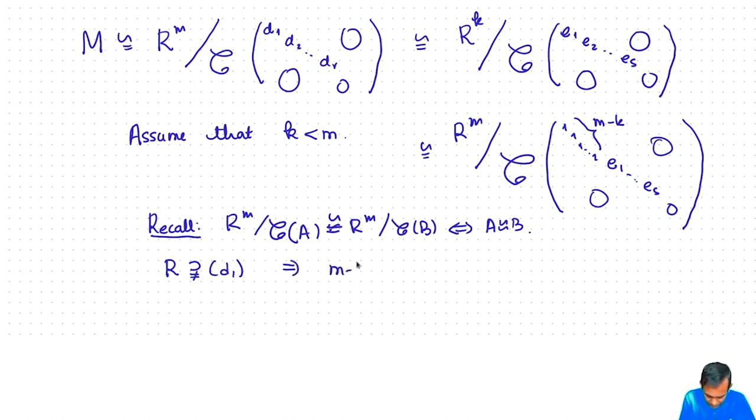So implies that m minus k is 0, i.e. m is equal to k. And moreover by the uniqueness of Smith canonical form it follows that r equals s and dᵢ equals eᵢ for all i. So we have just proved the structure theorem for finitely generated R modules. Let me write down the statement clearly.